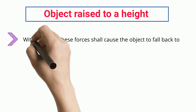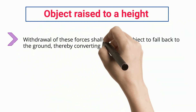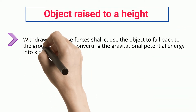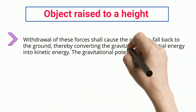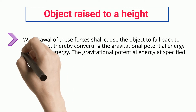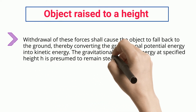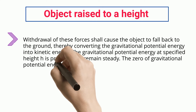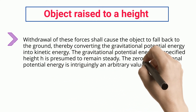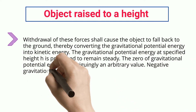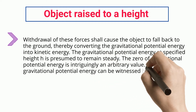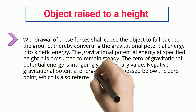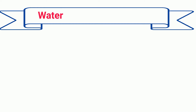Withdrawal of these forces shall cause the object to fall back to the ground, thereby converting the gravitational potential energy into kinetic energy. The gravitational potential energy at a specified height h is presumed to remain steady. The zero of gravitational potential energy is an arbitrary value; negative gravitational potential energy can be witnessed below the zero point, which is also referred to as the datum.